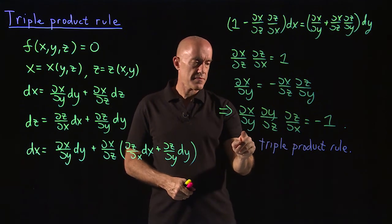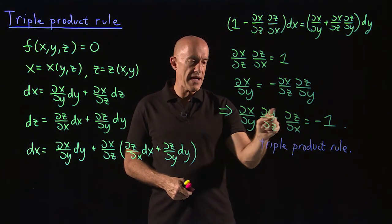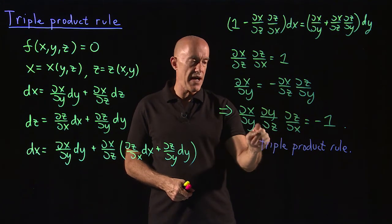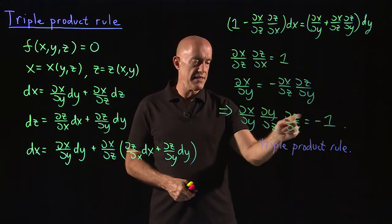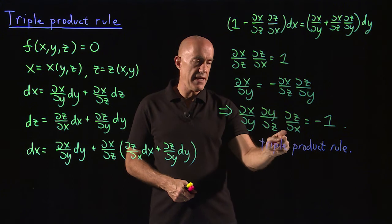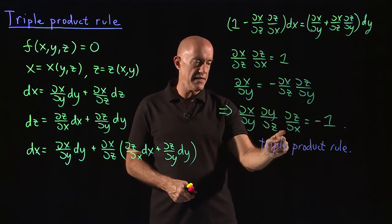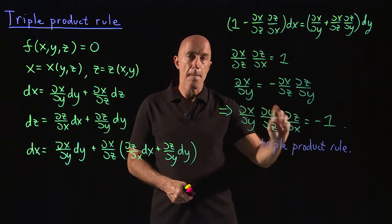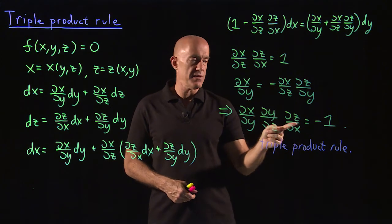Let's look at that carefully. dx dy, notice the y matches, dx dy, dy dz, notice the z matches, dz dx. dx dy, dy dz, dz dx equals minus one, minus one.